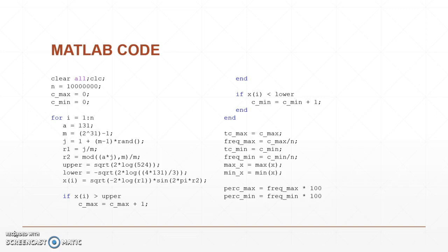...if x sub i is lower than our negative 3.54, then count it as a c_min. Then what I've done here is I've called tc_max the total count of how many were max above 3.54, and then I did a frequency of it.